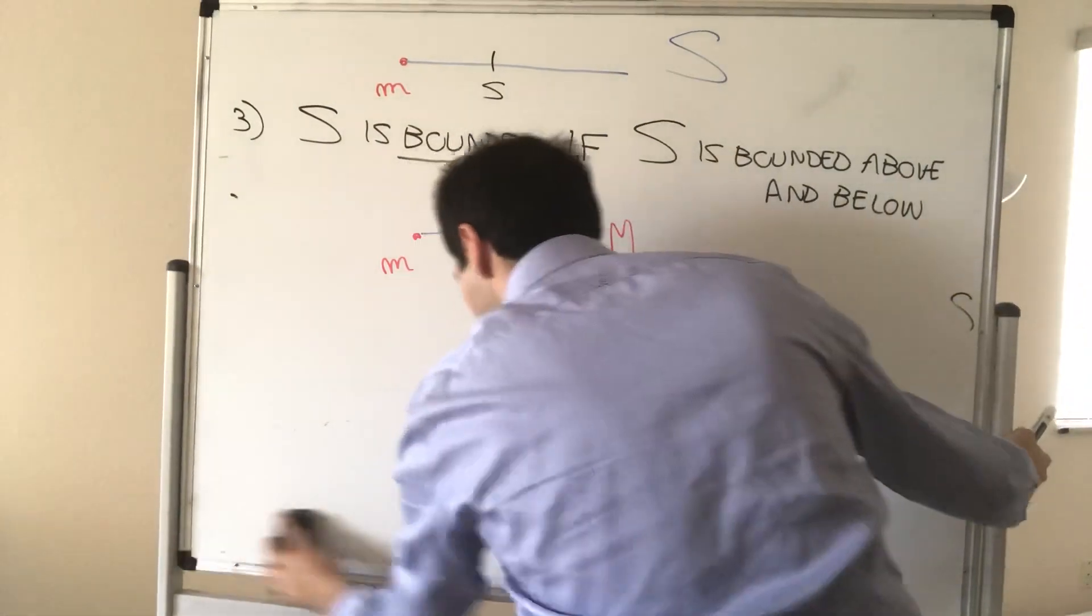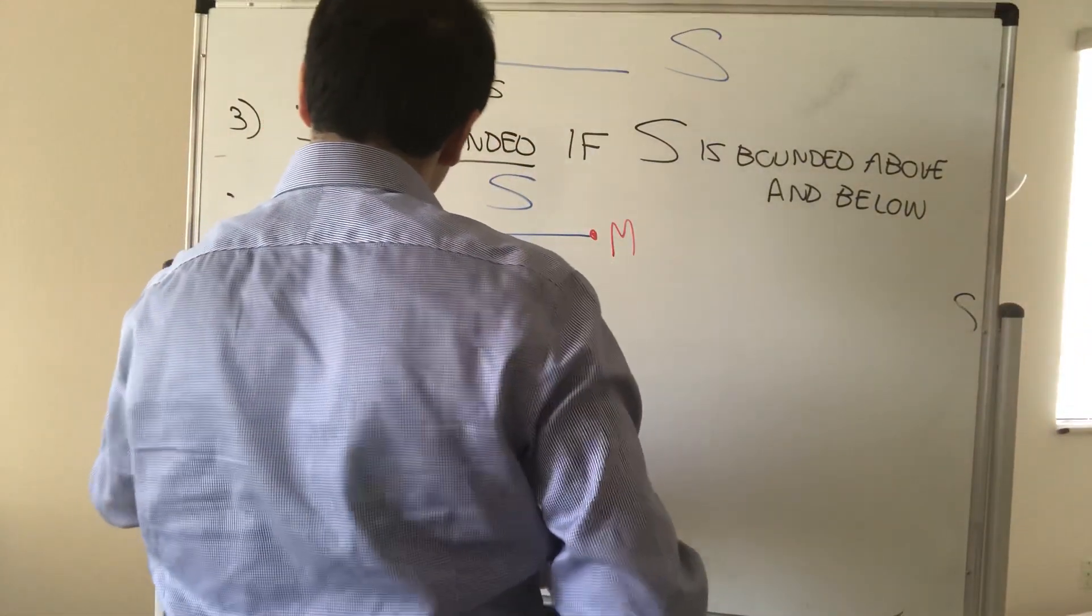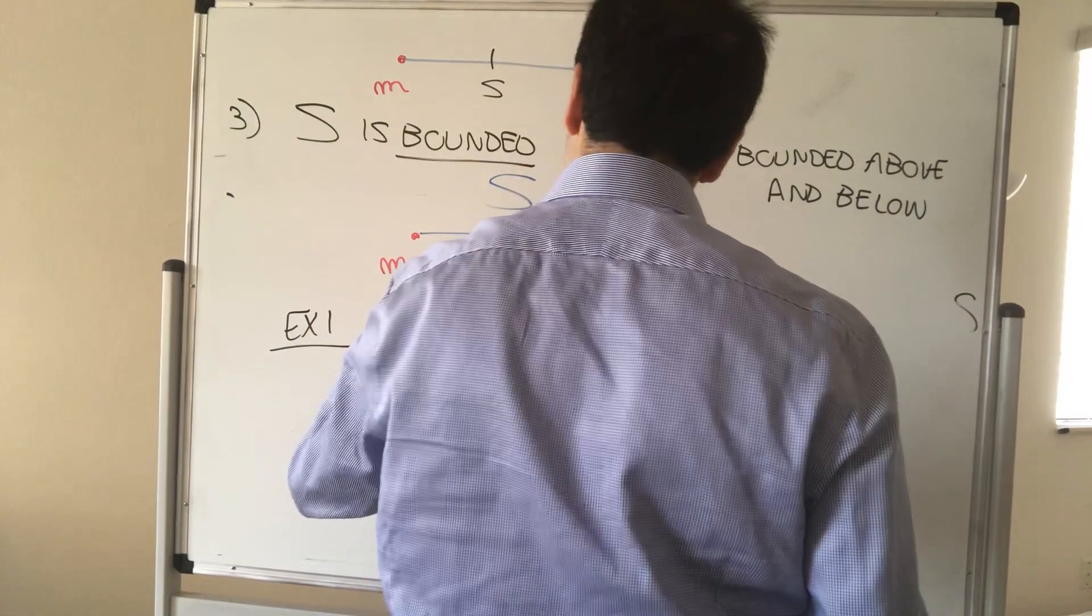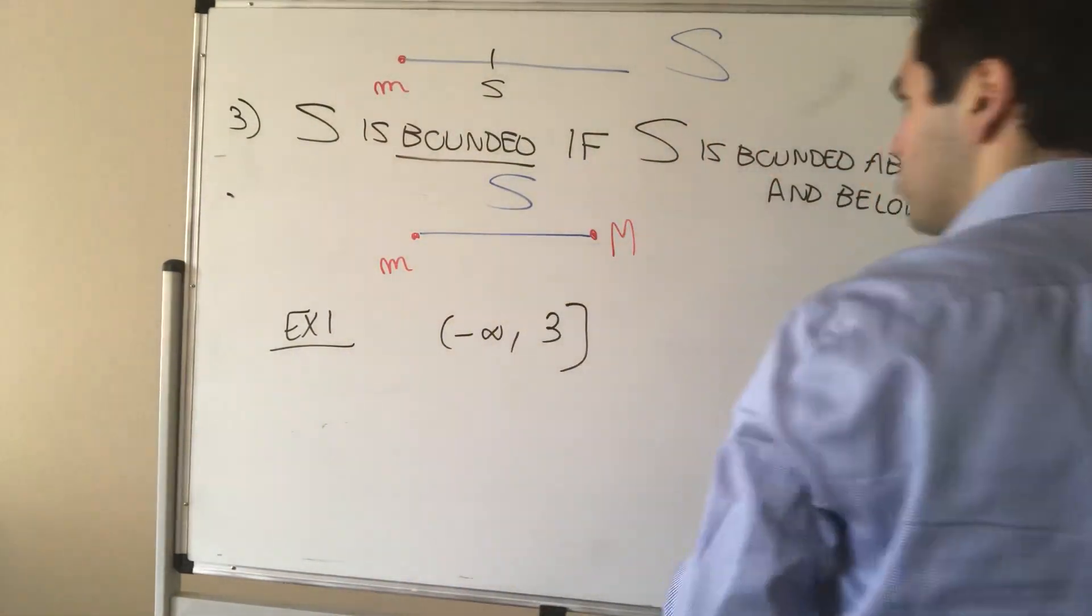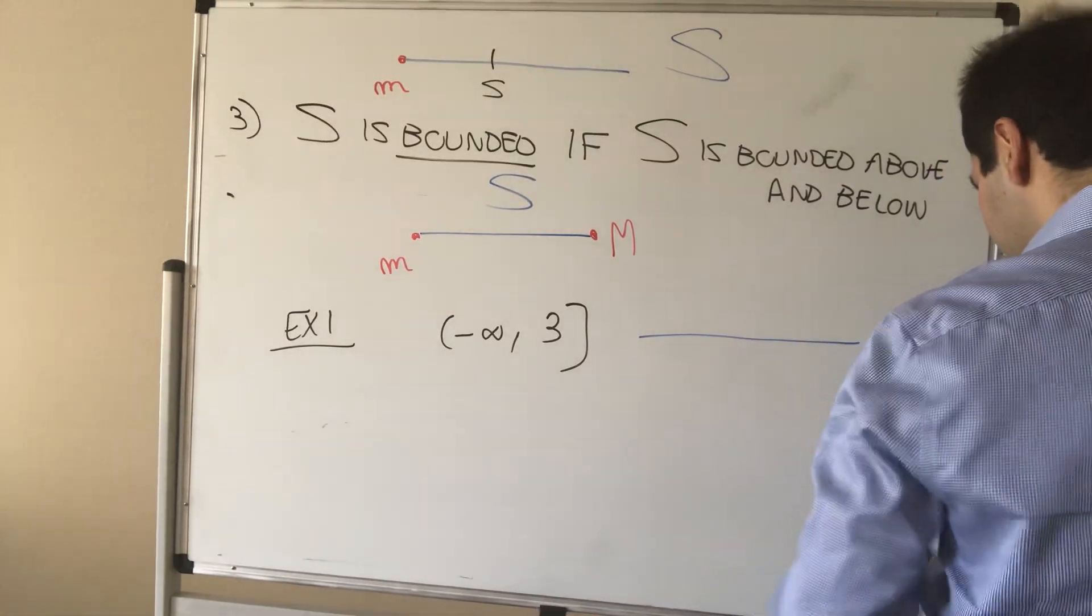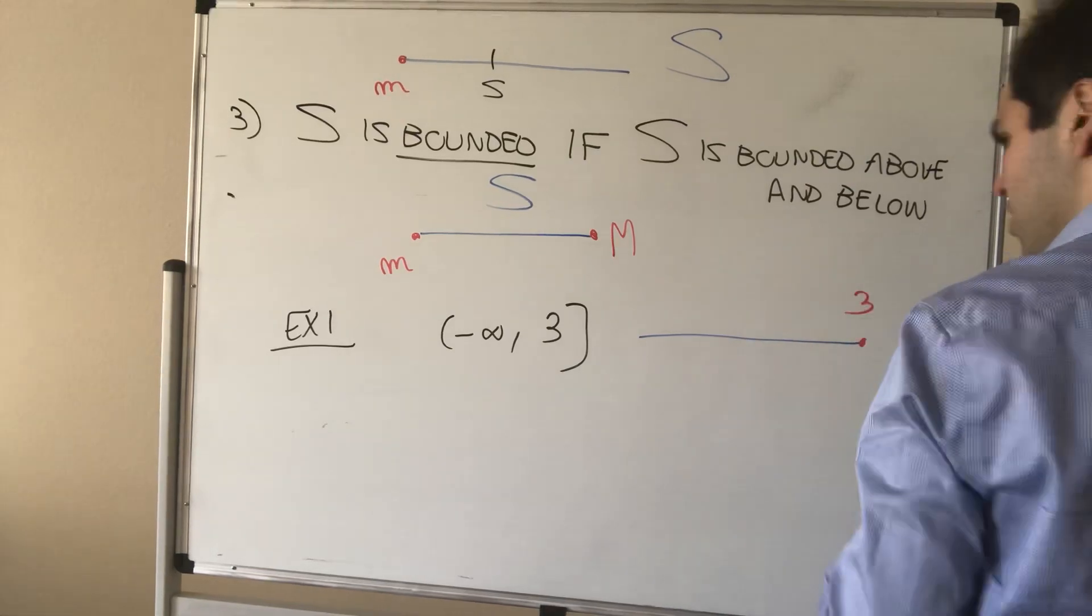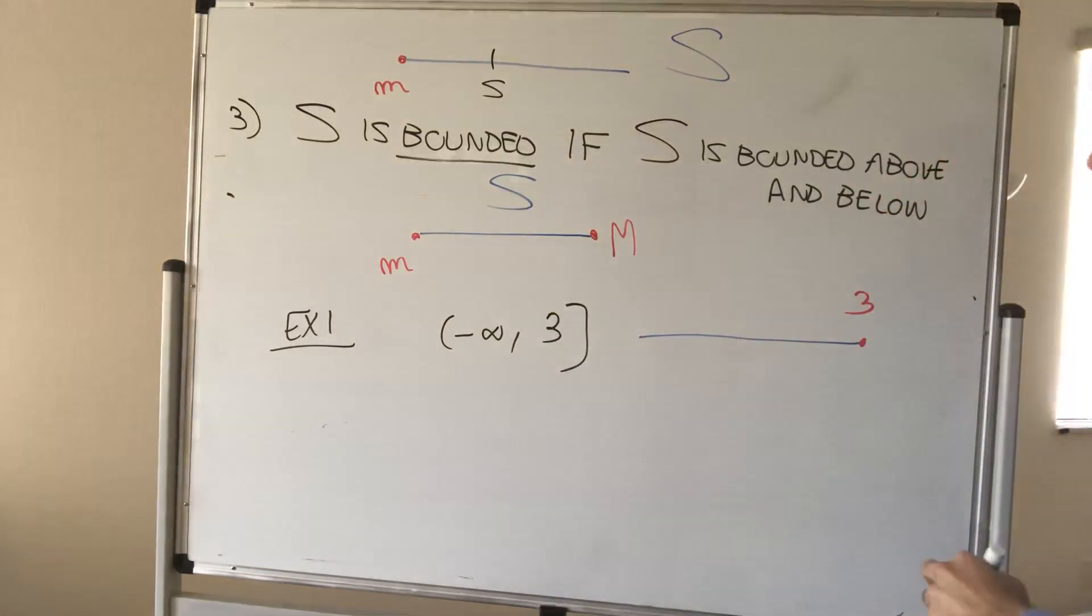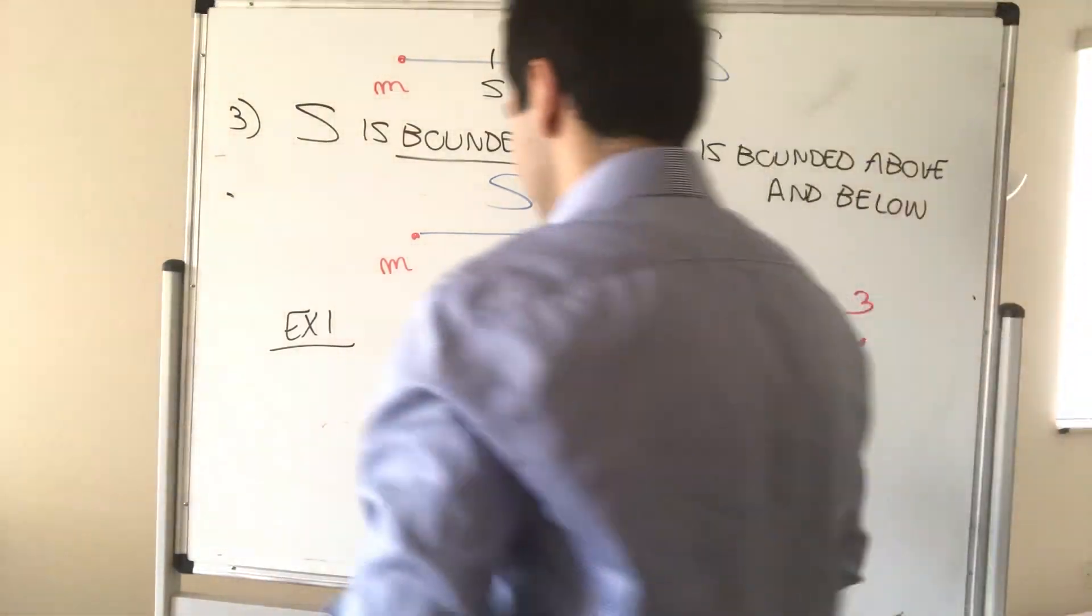All right, and just a couple of quick examples. Let's take, for instance, the interval minus infinity comma three, which again looks kind of like the first picture. So, this is three and it just goes on to minus infinity that way. Then, S is bounded above by three.